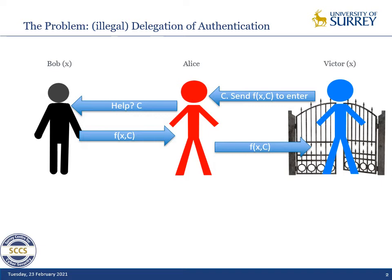The verifier guards a door which could be either the access to a building, or it could be, for instance, if Victor is a payment terminal, it could be accepting a payment or denying it.